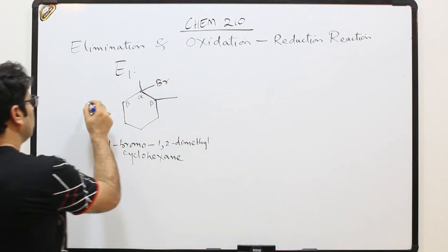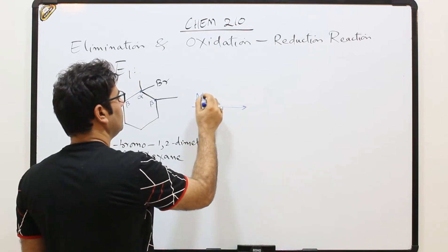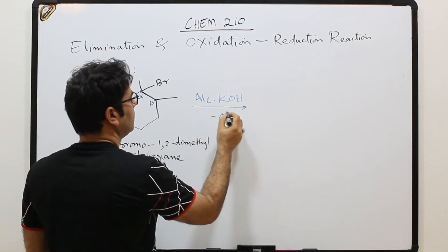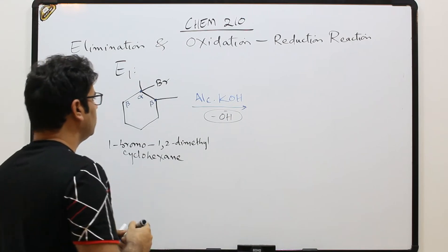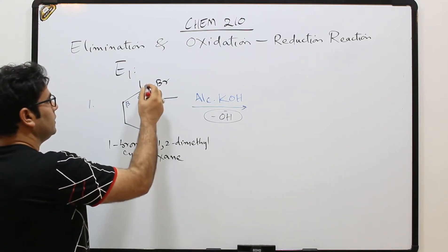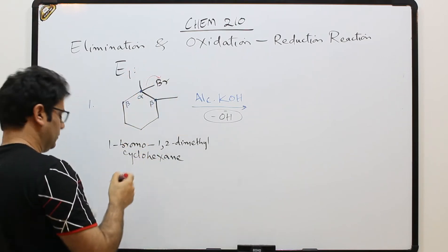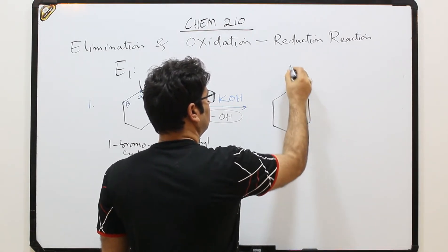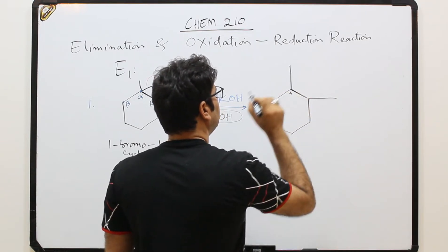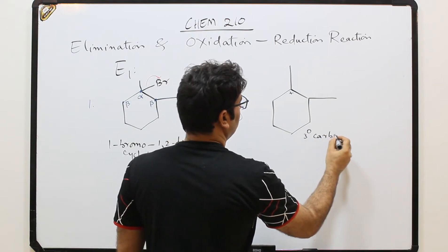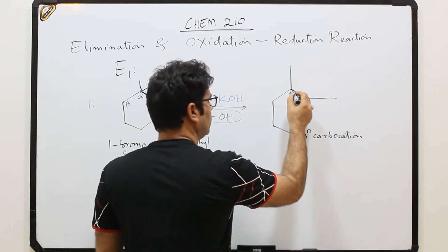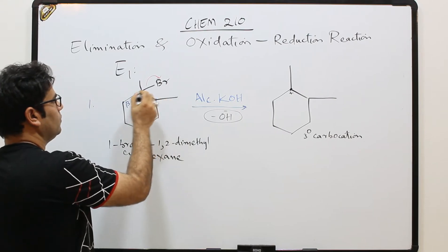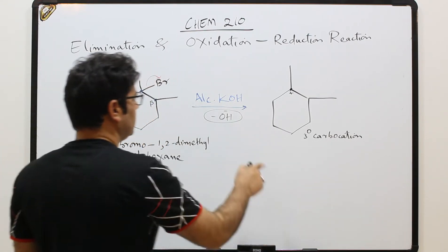In step one, in the presence of alcoholic KOH — this strong base releases OH⁻. The first step is carbocation formation: the bromine leaves and a positive charge forms. This is a tertiary carbocation because the alpha carbon has no hydrogen — it has three alkyl groups, so it is a tertiary alpha halide giving a tertiary carbocation.